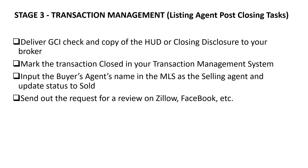For post-closing tasks as the listing agent: take the GCI check — the gross commission income check — and a copy of the HUD or closing disclosure to your broker. Mark the transaction closed in your transaction management system and upload the HUD or closing disclosure into Dotloop or DocuSign. Input the buyer's agent name in the MLS as the selling agent, the sold price, and change the status to sold. Then send out a request for a review on Zillow, Facebook, etc.